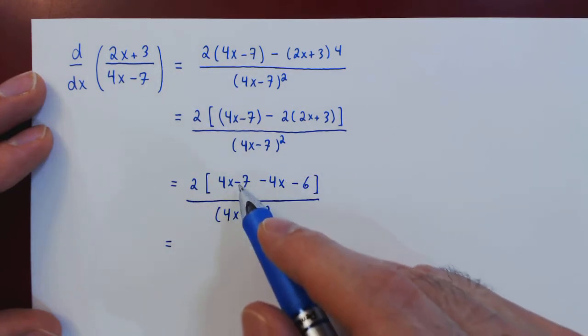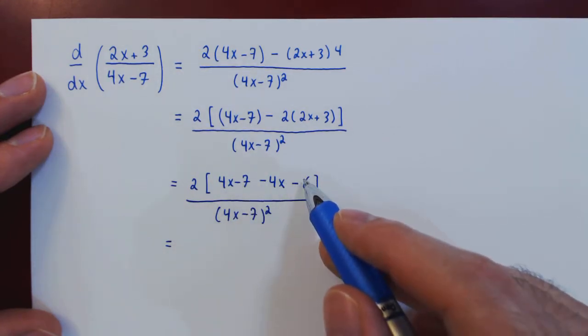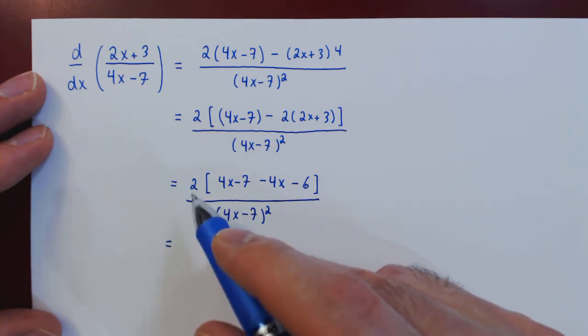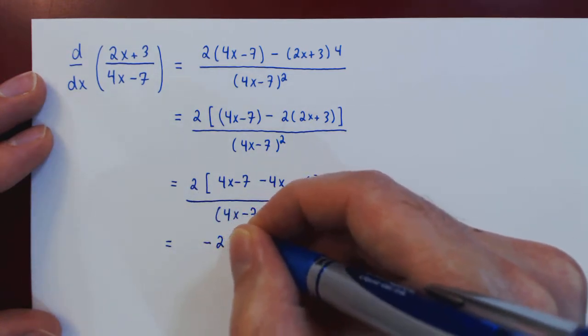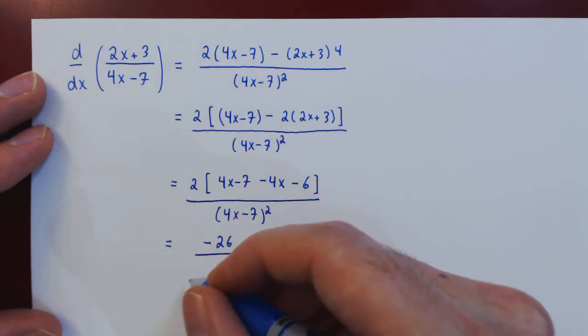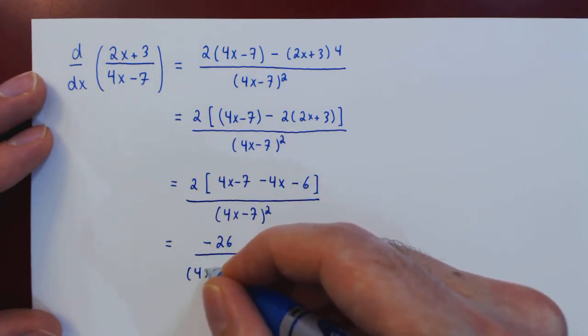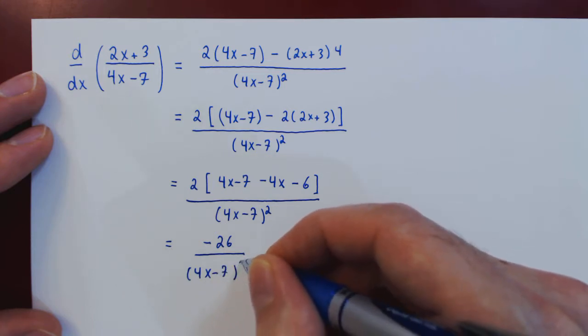4x minus 4x cancels, negative 7, negative 6, negative 13. And then we can multiply by 2, so negative 13 times 2, negative 26, over of course 4x minus 7 squared.